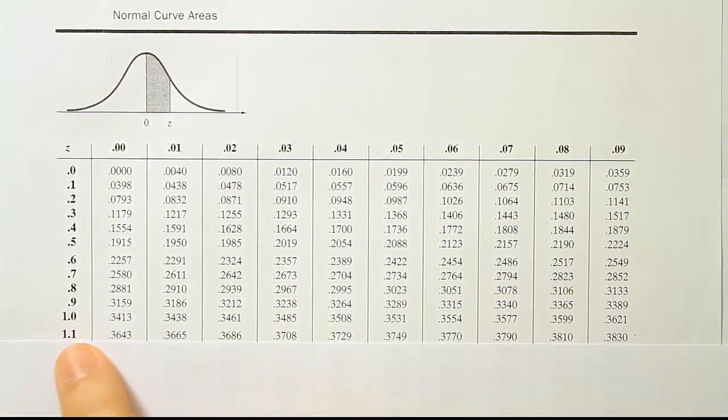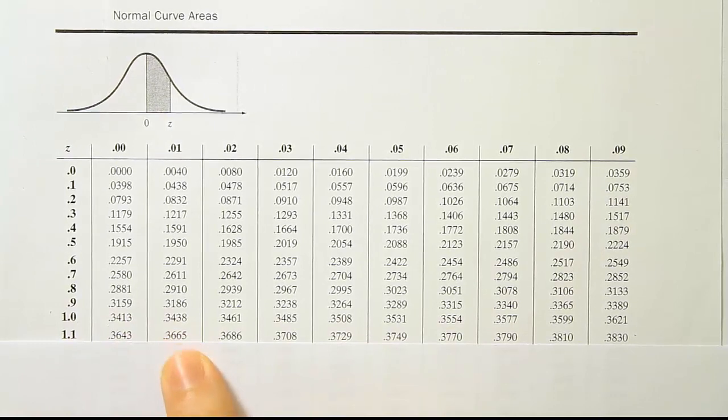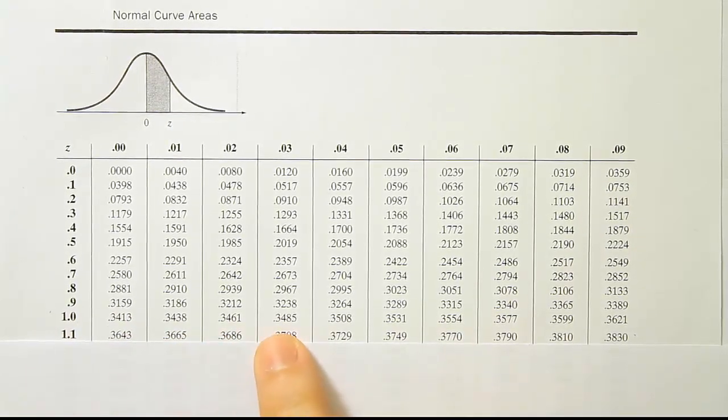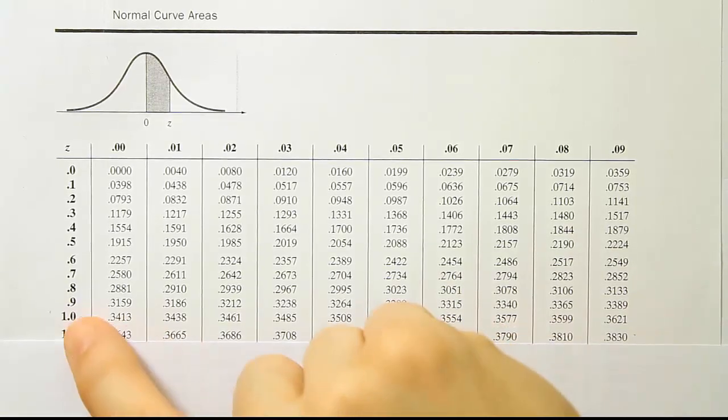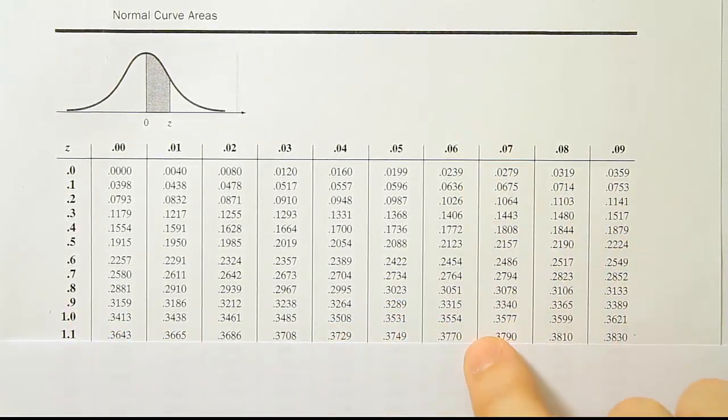Another way to do it is to look up the 1.1 and you can count over to get to 6. But remember, it starts at 0. So it will be 1.10, 1.11, 1.12, 3, 4, 5, 6. And that's how you would get to the 1.16. Anyway, the answer is .3770.